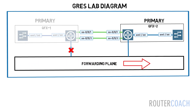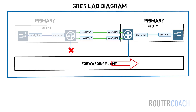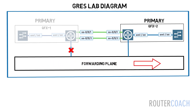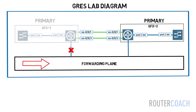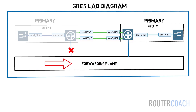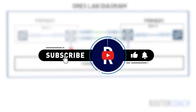However, even though interface information and the kernel remain intact — the kernel being what contains all of the operating system services — neighboring devices can detect that the master routing engine has experienced a restart and their routing protocols will reconverge accordingly. To prevent routing protocol reconvergence during a switchover, GRES must be combined with either non-stop active routing or Graceful Restart protocol.